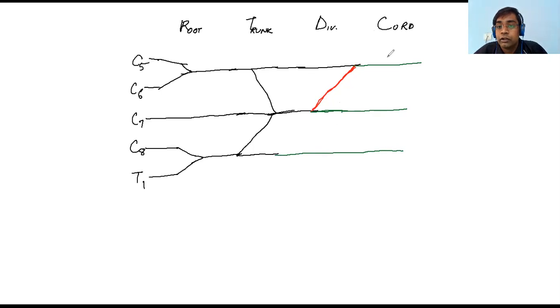So the name of the girl was Laila. The name of the boy was Majnu and here was Papa. So L stands for lateral cord, P stands for posterior cord, and M for Majnu stands for medial cord.